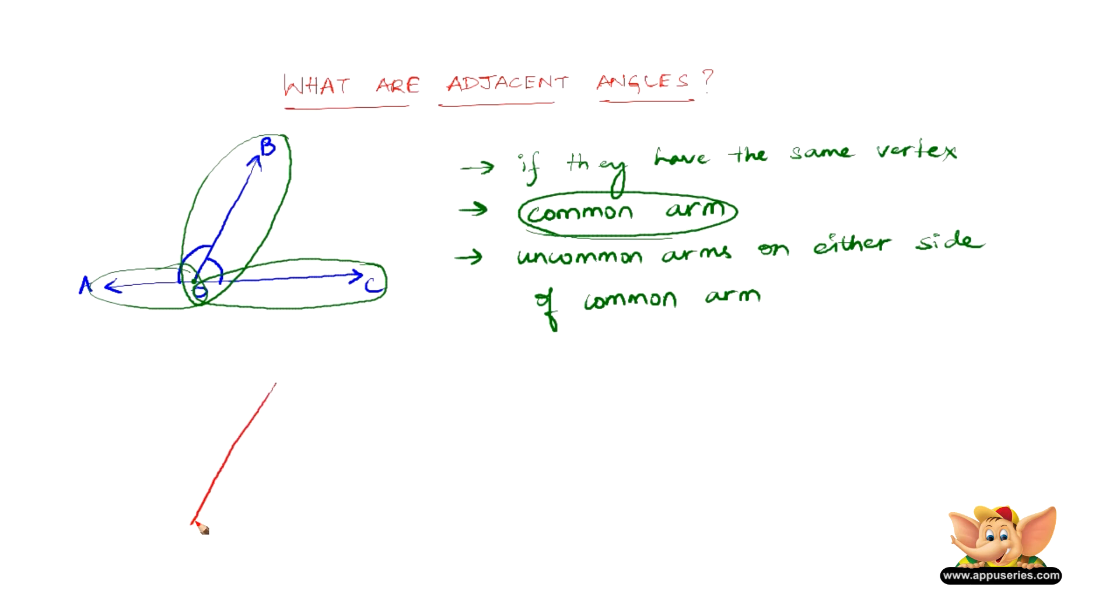Let us take an example. Say we have an angle like this and then we have a line like this. So say this is the vertex. So we have this as 20 degrees and say we have this as 40 degrees. So this will be A, O, B and C.